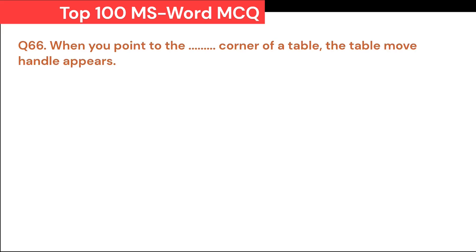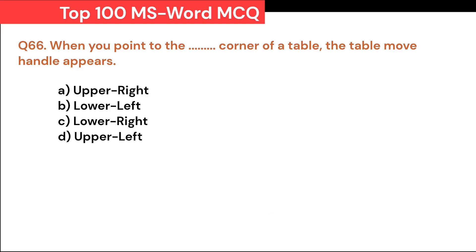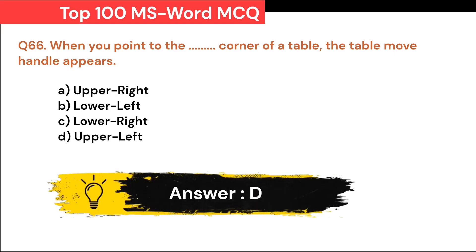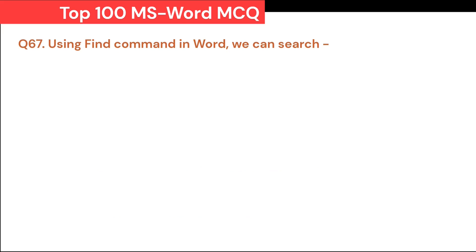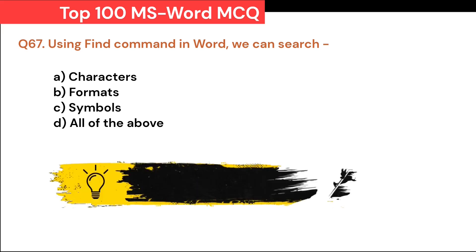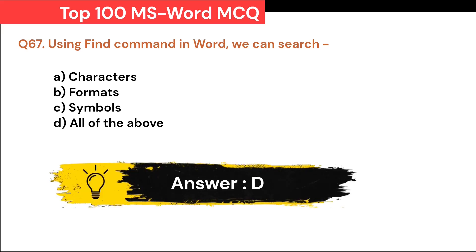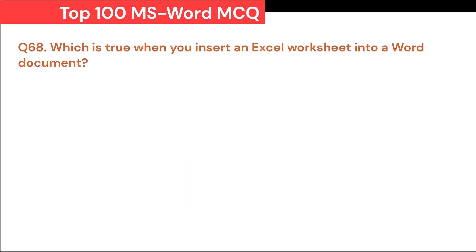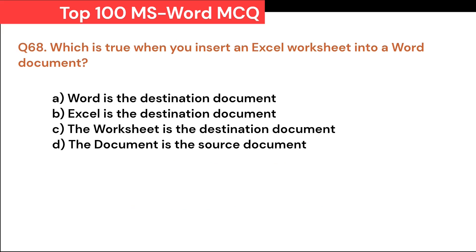When you point to the Dash corner of a table, the table move handle appears: A. Upper right. B. Lower left. C. Lower right. D. Upper left. Correct answer is D. Upper left. Using the Find command in Word, we can search: A. Characters. B. Format. C. Symbols. D. All of the above. Correct answer is D. All of the above. Which is true when you insert an Excel worksheet into a Word document? A. Word is the destination document. B. Excel is the destination document. C. The worksheet is the destination document. D. The document is the source document. Correct answer is A. Word is the destination document.